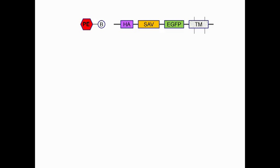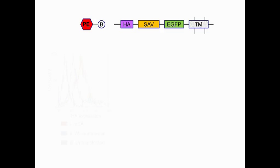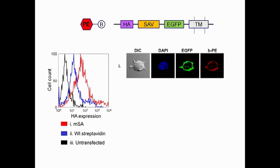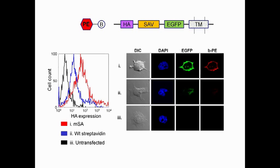The designed monomer can be used as a genetic fusion tag. For instance, it can be fused to a cell surface receptor for labeling with a biotinylated fluorophore. On the other hand, wild-type streptavidin tetramer can be easily fused to a heterologous protein in a functional form.